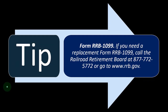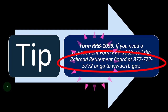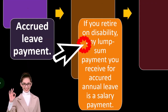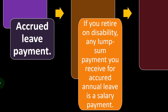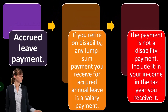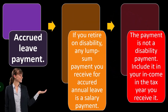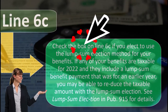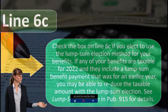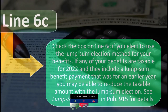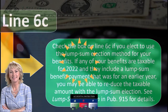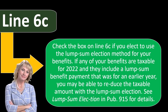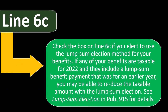X must also complete the Social Security benefits worksheet to find out if any part of the $12,000 is taxable. If you need a replacement Form RRB-1099, call the Railroad Retirement Board. Regarding accrued leave: if you retire on disability, any lump sum payment you receive for accrued annual leave is a salary payment — not a disability payment — so include it in your income in the tax year you receive it. On line 6c, check the box if you elect to use the lump sum election method. If any benefits are taxable for 2022 and include a lump sum benefit for an earlier year, you may be able to reduce the taxable amount. See Publication 915 for details.